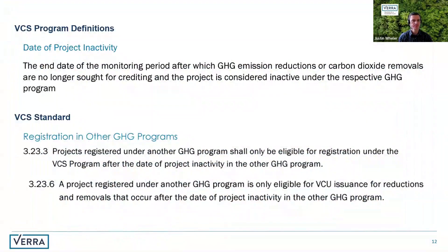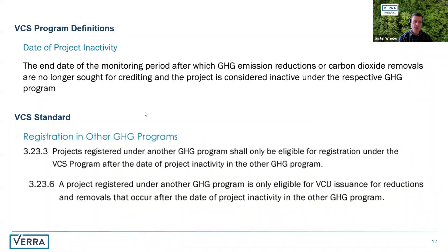Here is the actual definition for the date of project inactivity and the language from the standard stating that projects cannot register until they are officially inactive in the other program. Depending on the program, that may take a different shape — some programs have an official inactive status or even a deregistration process, while others just require that you not submit a crediting request and make the representation that you're no longer seeking credits under that program.